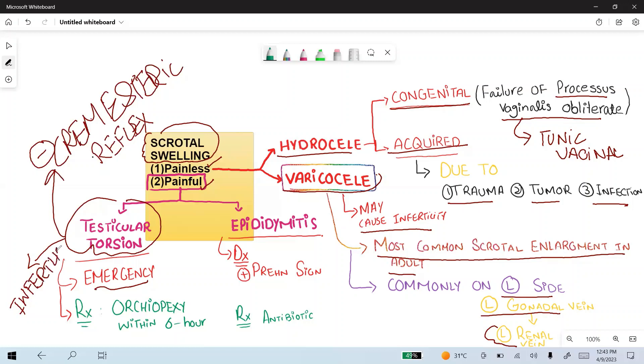Epididymitis is basically due to STDs and other infections. In this, Prehn sign is positive. On elevation of the scrotum, there is a decrease in pain, which is positive in epididymitis. This is due to bacterial infection, so antibiotics are the treatment of choice in epididymitis.